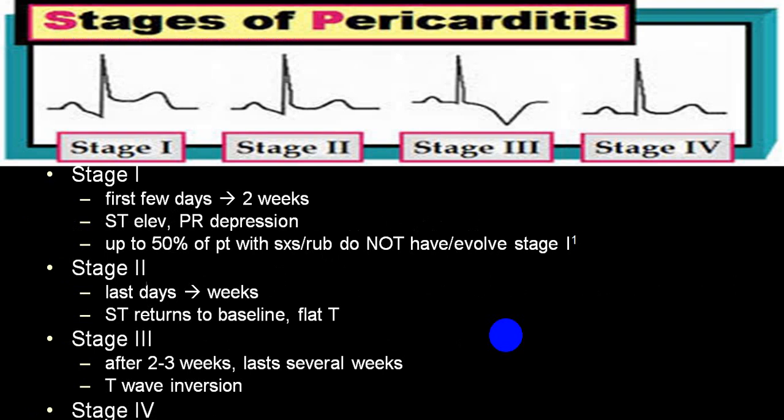As far as ECG is concerned, changes are divided into four stages. Stage one, lasting a few days to two weeks, shows ST elevation with PR depression; it may or may not be associated with a rub. Stage two lasts about four weeks: ST returns to baseline and the T wave becomes flat. Stage three, after two to three weeks, shows T wave inversion. Stage four, lasting many months, shows the T wave returning to the isoelectric line and becoming upright again.